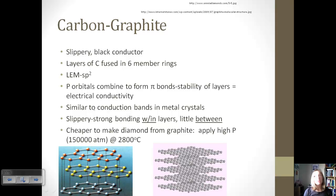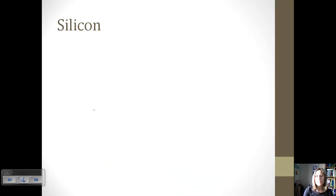It is cheaper to make diamond from graphite. And so you would apply a very high pressure at a high temperature and turn your graphite into diamond. So we can artificially, I guess you could say, make diamond.